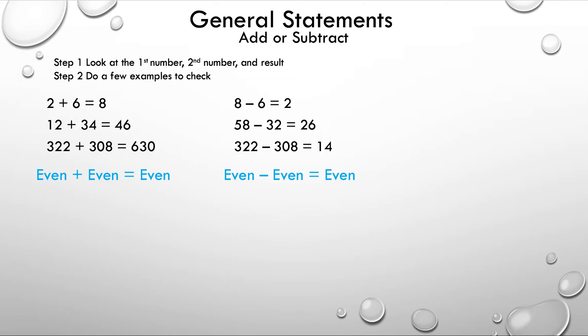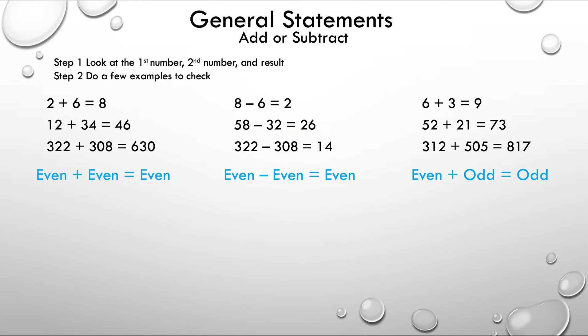Let's take a look at the next example: 6 plus 3 is 9, 52 plus 21 is 73, and 312 plus 505 is equal to 817. The general statement for this one: even plus odd is equal to odd. You may also be wondering what happens if you flip the numbers — for example, 6 and 3, or 52 and 21.